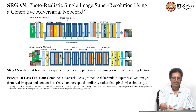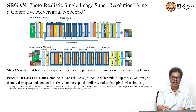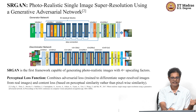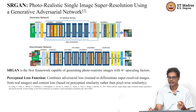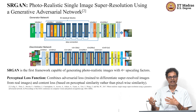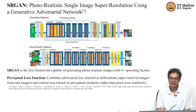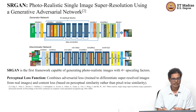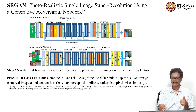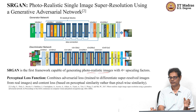The generator network takes a low resolution image as input and produces a super-resolved output. The discriminator always takes a high resolution image as input and classifies it as real — coming from a real dataset — or fake, coming from the generator. The discriminator is essentially a two-class classifier network. SRGAN is actually the first framework that generated photorealistic images with 4x upsampling.